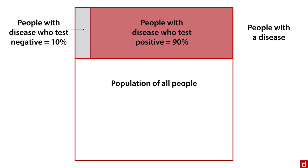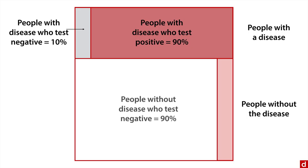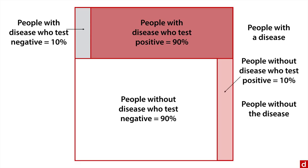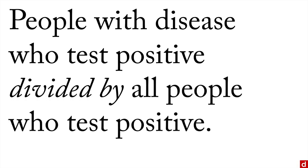We've got 90% of the people who have the disease — that's a conditional probability — who test positive. But what about the other people, the big white area below representing all people without the disease? We're going to see if any of them ever test positive — do we ever get false positives? With any test, you are going to get false positives. So let's say 90% of people without the disease test negative the way they should, but 10% of them test positive — those are false positives. To answer the question of whether a positive test means you have the disease, what you need is the number of people with the disease who test positive divided by all people who test positive.